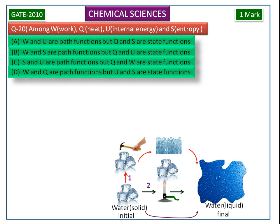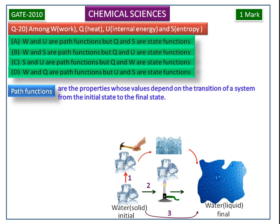Now we see the definition of path functions. Path functions are the properties whose values depend on the transition of a system from the initial state to the final state. Examples are heat, work and time.